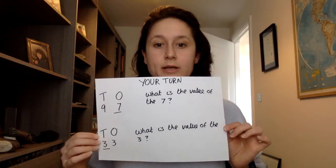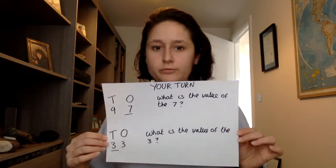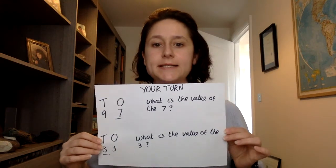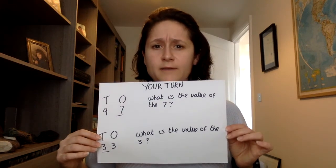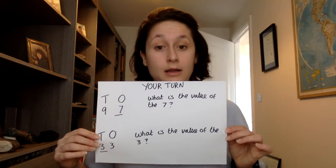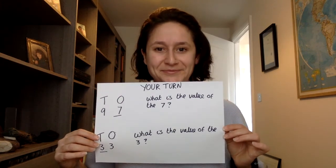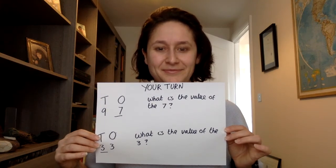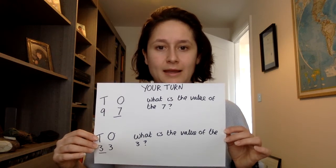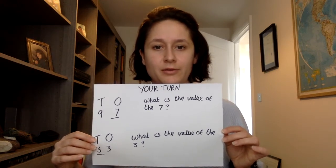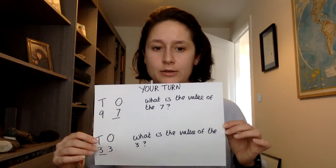So that first question: you've got the number 97, and it's asking you for the value of that seven. What is the value of that seven? If you need to draw out your Dienes blocks, go ahead — draw them out on a piece of paper. And you should have the answer of seven. Nice and easy. Good stuff.